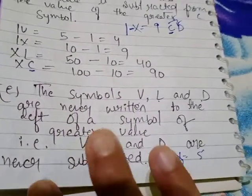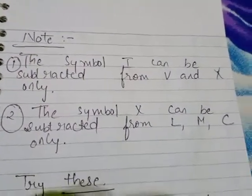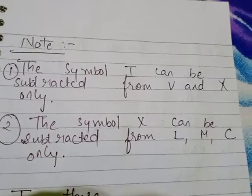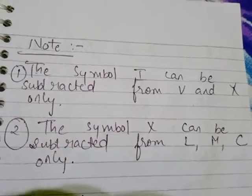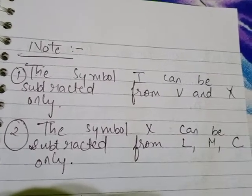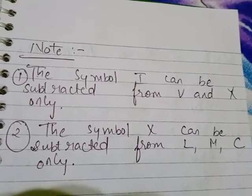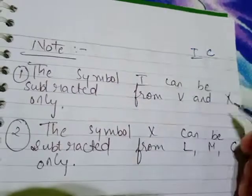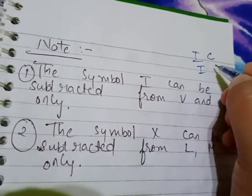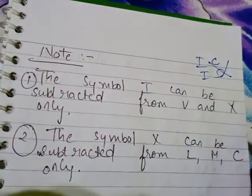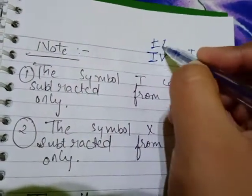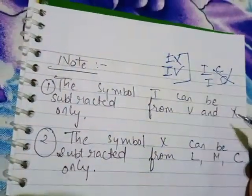Now two important notes. First: symbol I can be subtracted only from V and X. This means I can only be written before V or before X. Writing I before C or D is wrong. I can only appear to the left of V and X — only these two cases.